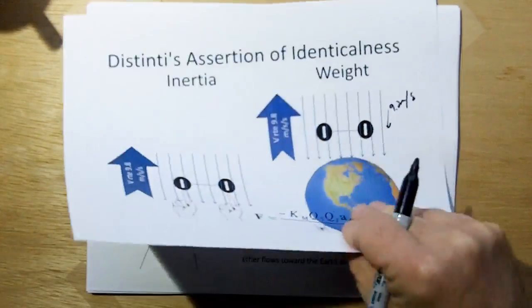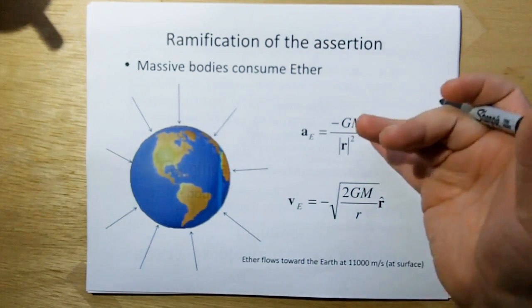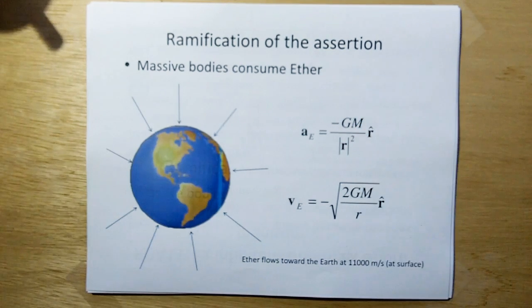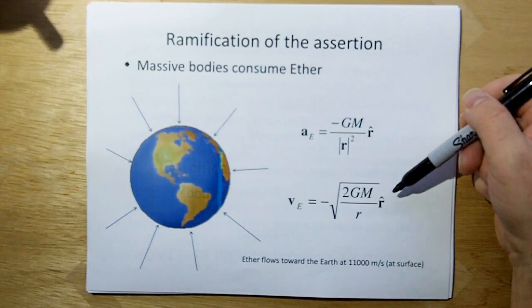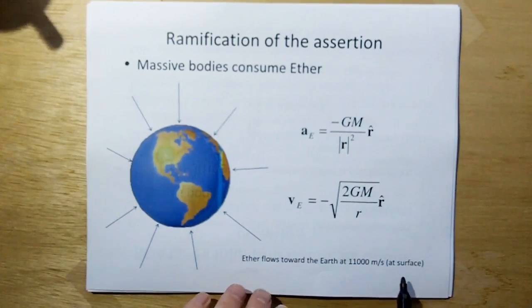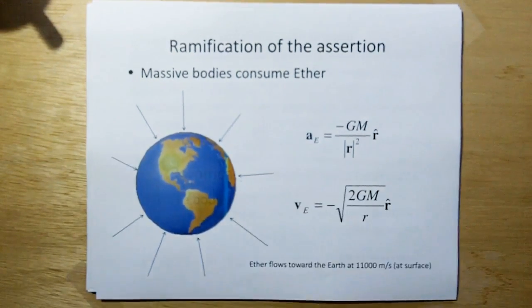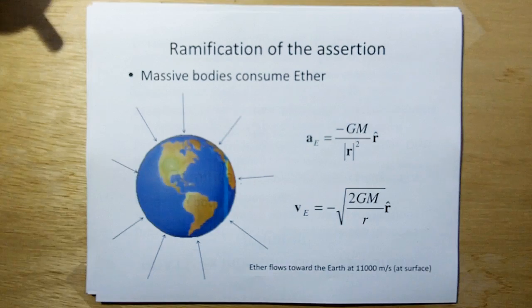Gravity, which has a ramification because that means massive bodies consume ether. If we were to compute the acceleration of ether toward a massive body, we just take Newton's gravity equation, divide by m, and that gives us the acceleration of the ether. If we wanted to compute the velocity of the ether relative to a massive body, that's pretty much identical to the escape velocity derivation. If we put in the calculations it means that ether flows toward the earth at 11,000 meters per second at the surface. So we're traveling 11,000 meters per second relative to the ether right now as we're sitting on the earth being absolutely stationary.